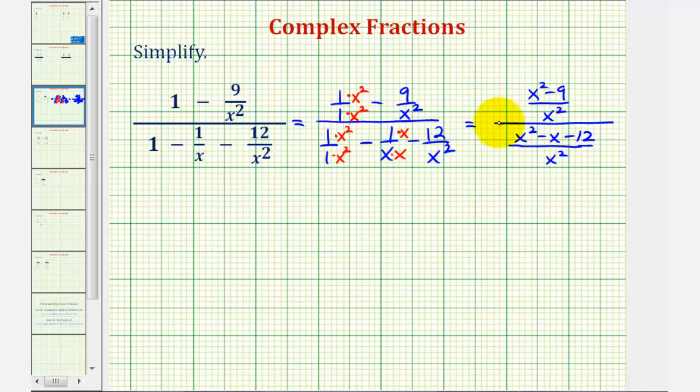And now, because this fraction bar here represents division, we can write this as a division problem involving two rational expressions. We'd have the fraction on top divided by the fraction on the bottom. But normally, when dividing by fractions, we multiply by the reciprocal instead.